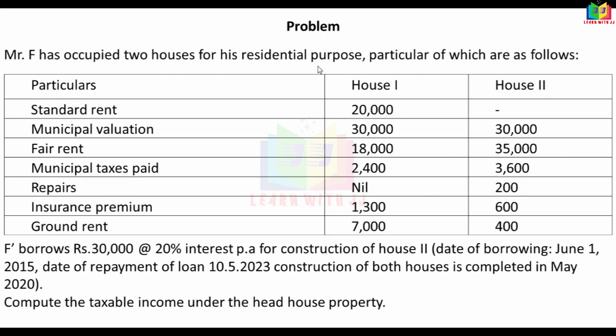For residential purpose use, these are self-occupied houses. For a self-occupied house, the net annual value is nil — gross annual value equals net annual value. Standard rent, municipal valuation, and fair rent are the key figures to find here.